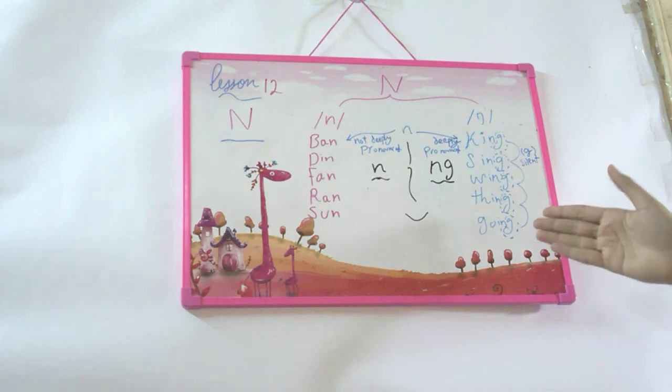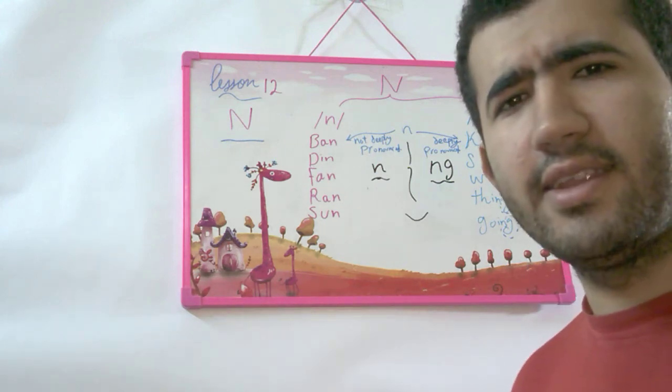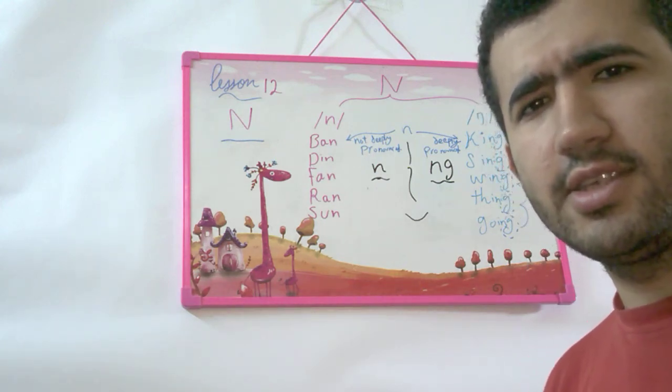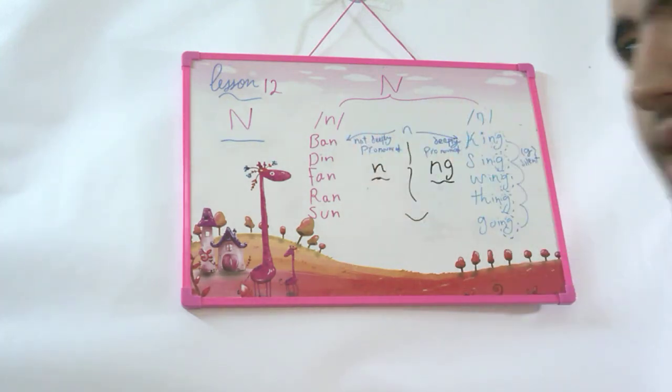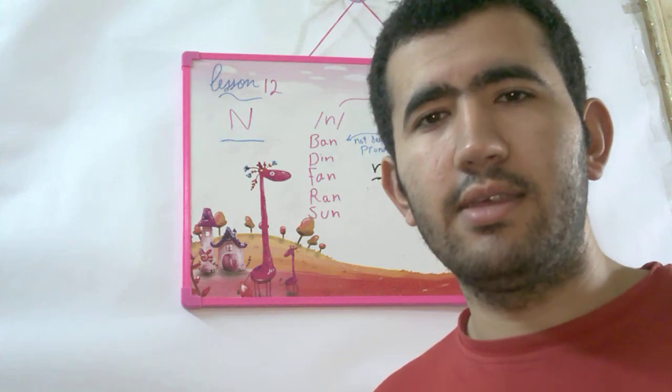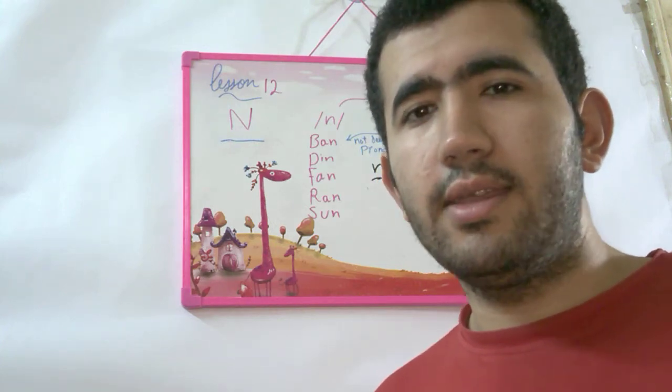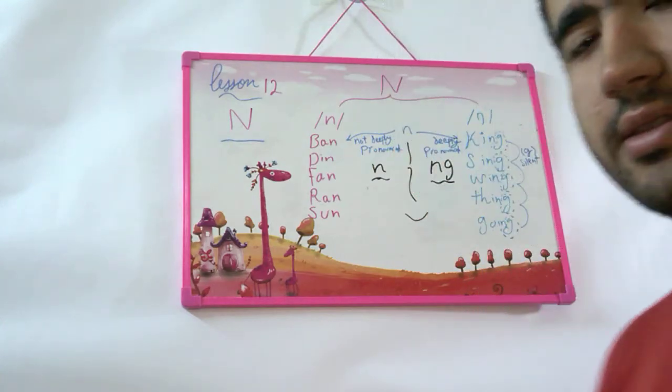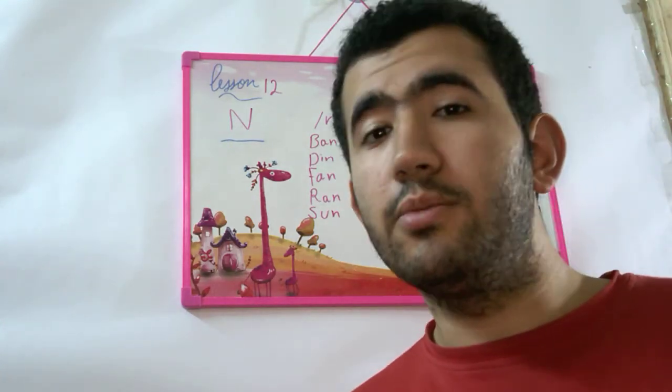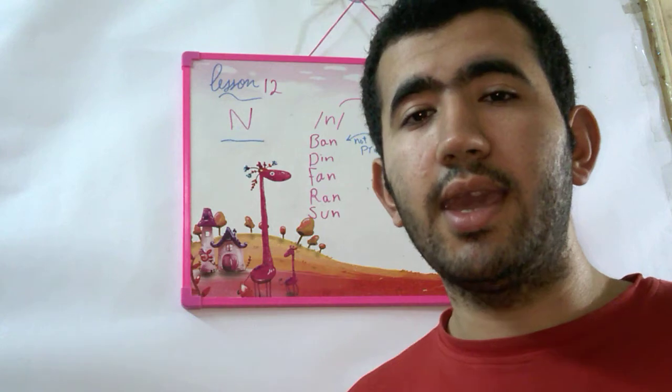These are for the deeply pronounced N. Strong, stressed. Okay? But here the N is not stressed. That's the difference between the N and N. I just make it this way to help you understand the difference between N and N.